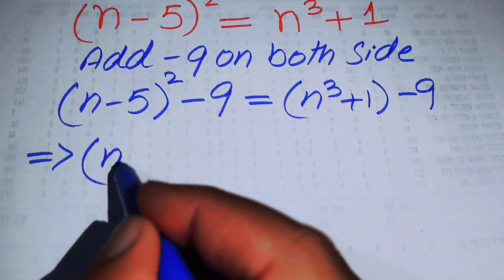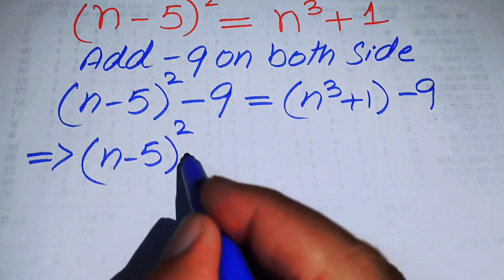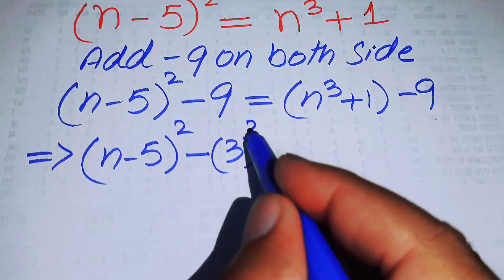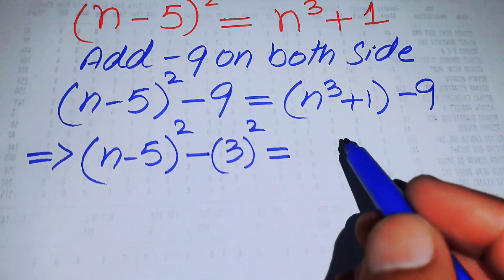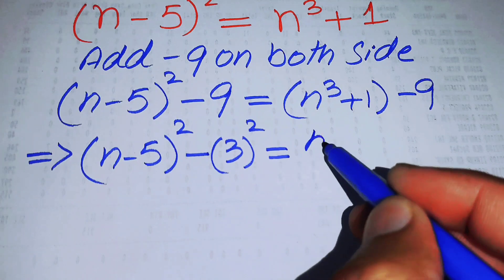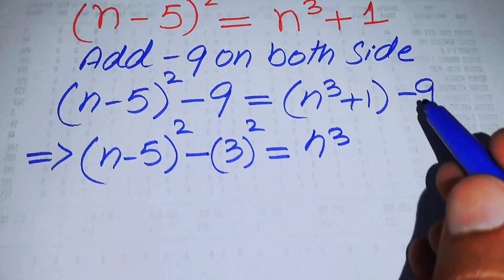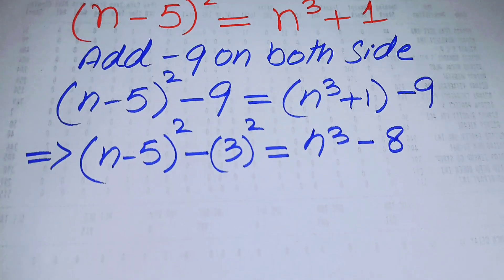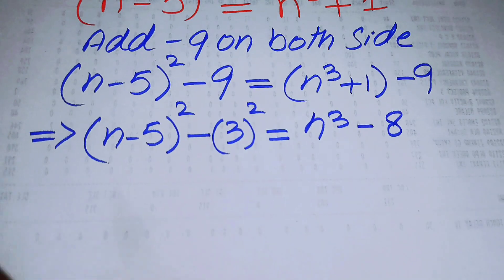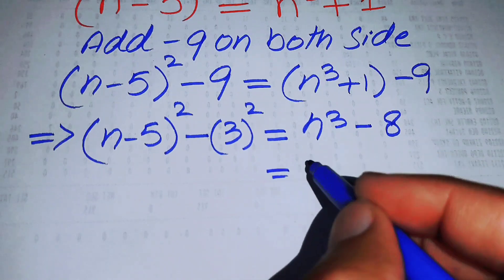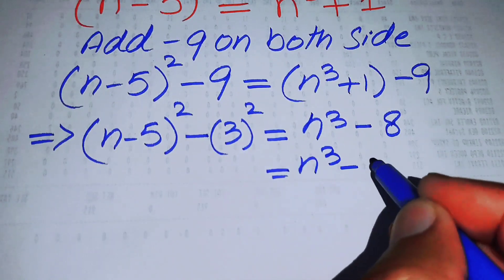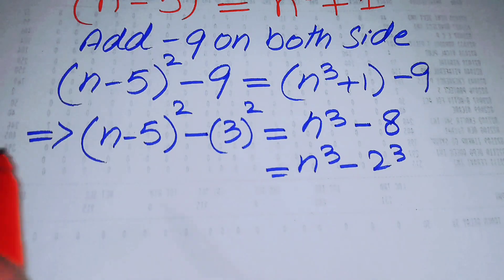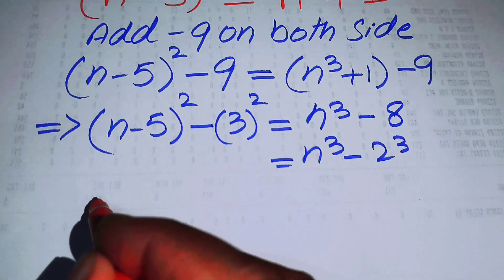We can rewrite the left side as (n - 5)² - 3² and the right side simplifies: 1 - 9 = -8, so we have n³ - 2³ on the right. We need two formulas to proceed.